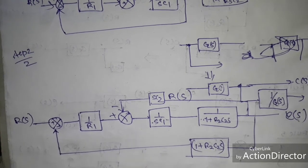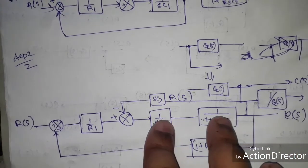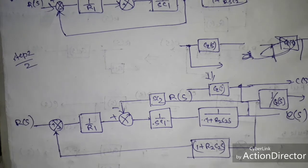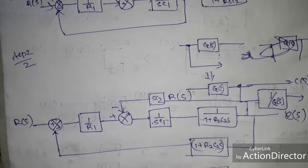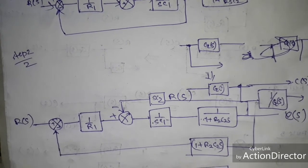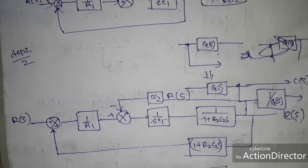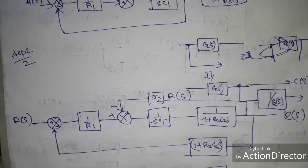In step two: plus/minus 1/R1, multiplied by the cascade block, with negative feedback applied. This gives 1/(s·C1 + R2·C1·C2·s² + s·C2). Then this becomes 1/(1 + R2·C2·s). Now you can easily find the transfer function by multiplying these blocks and applying the negative feedback formula G(s) / (1 + G(s)·H(s)) to get the final transfer function of the system.